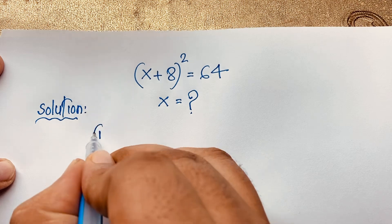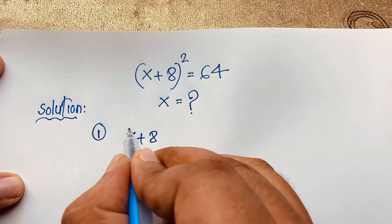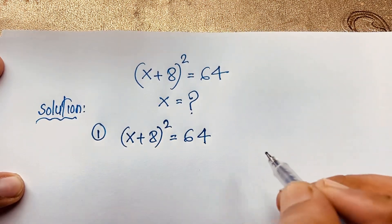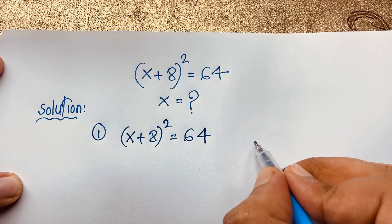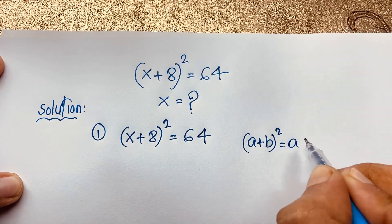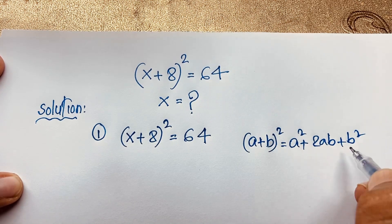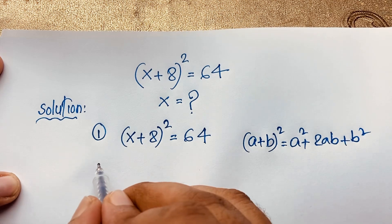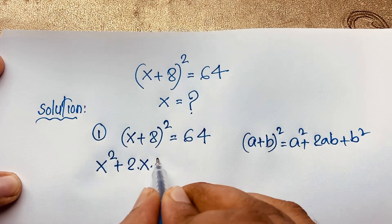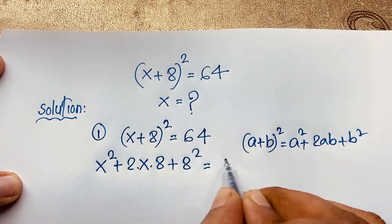First method: we have (x + 8)² = 64. We know that (a + b)² = a² + 2ab + b². If I apply this formula here, it will be x² + 2·x·8 + 8² = 64.